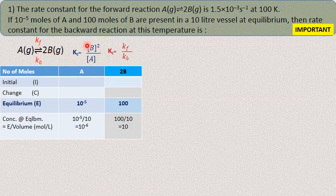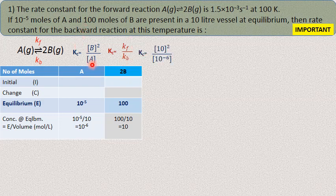Kc equals the product of molar concentrations of products divided by reactants. We need the equilibrium concentrations of B and A. The equilibrium concentrations are: number of moles divided by volume. Moles of A = 10⁻⁵, moles of B = 100, volume = 10 liters. So concentration of A = 10⁻⁶ mol/L and concentration of B = 10 mol/L.